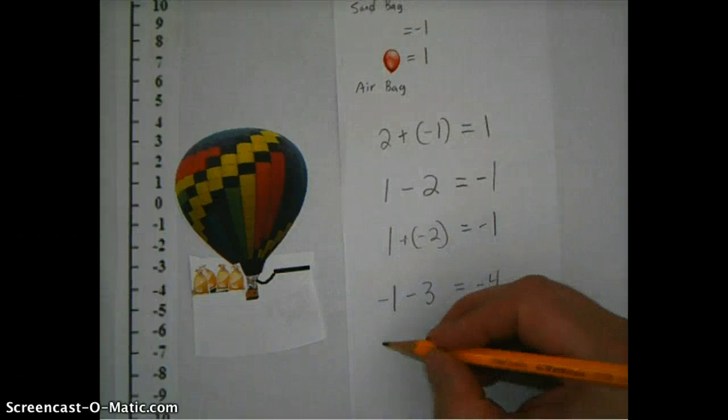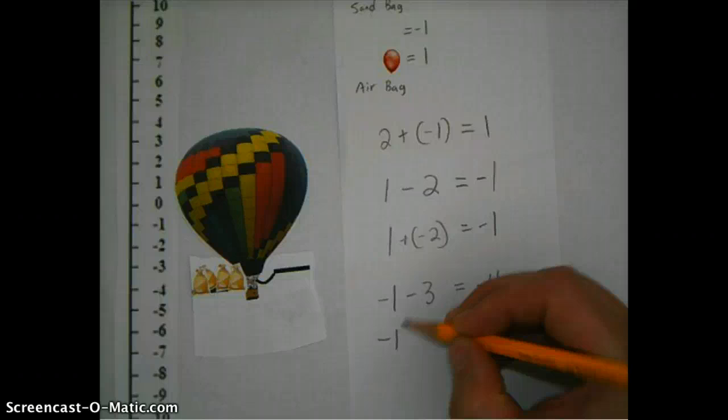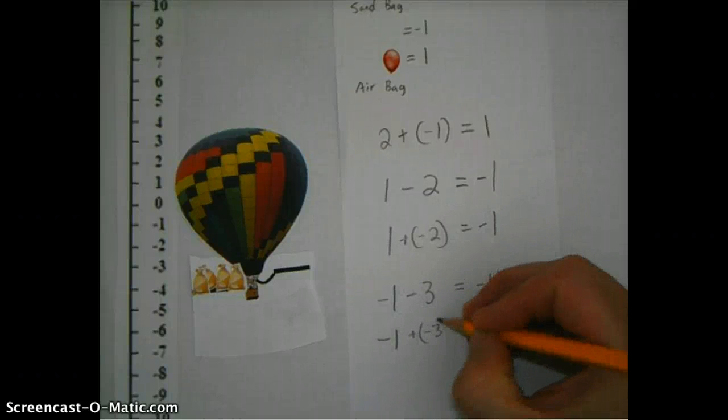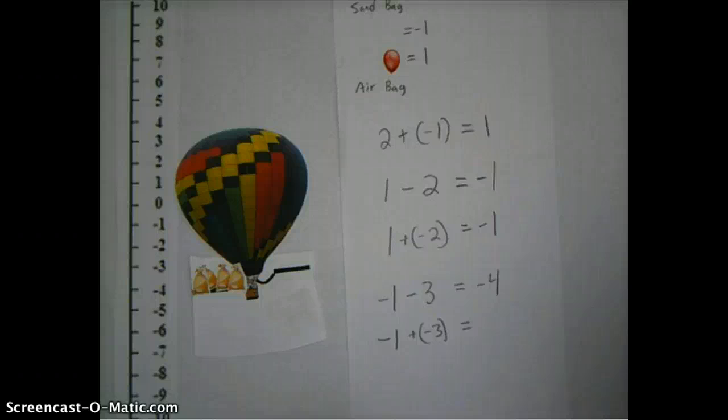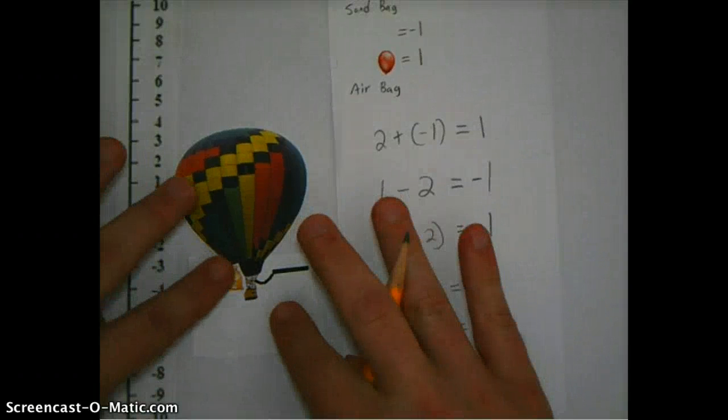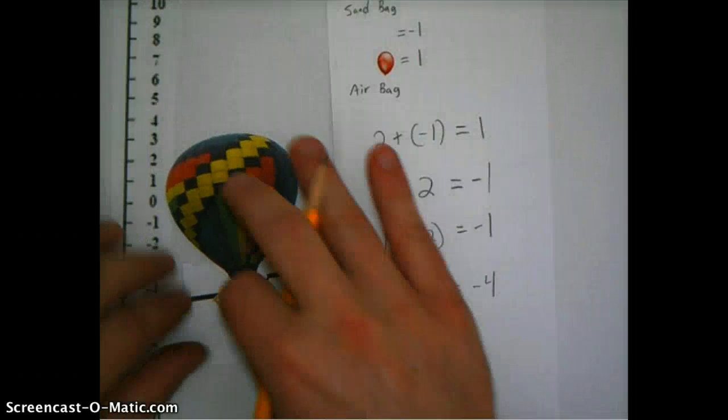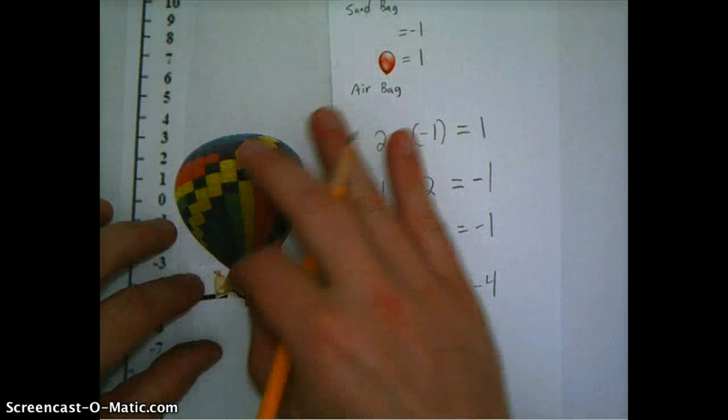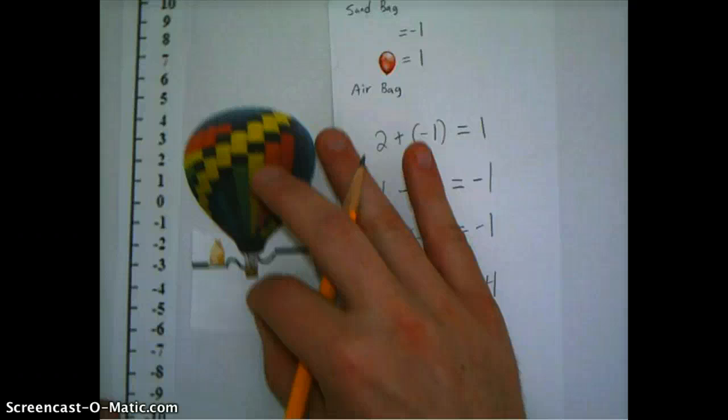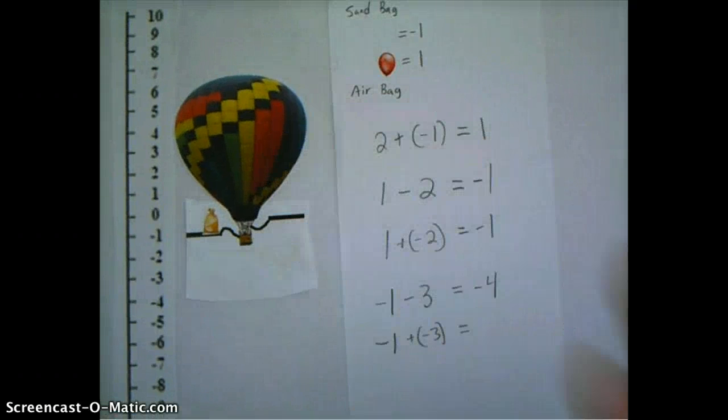Alternatively, I could have done a minus one plus a minus three, which should still give me the same result. But it's a very, the concept is different. Again, I'll start off with a minus one here. Okay, so here is my one sandbag, leaving me at an altitude of minus one.